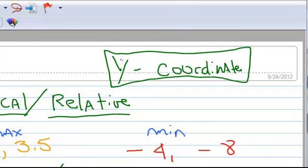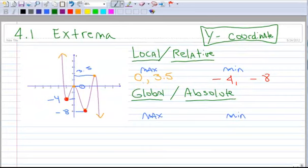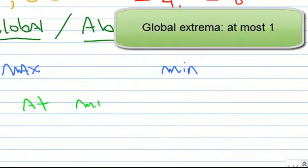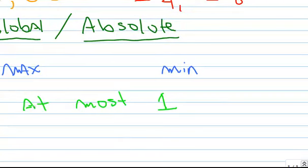Alright, so let's talk about global a minute. Okay, so global means extreme. Notice here, let's go back to local a minute. Notice for local, I had two maximums and two minimums. When we deal with global, we can have at most 1, which means you can have 1 or you can have none, because that would be at most 1. And the way you figure out if you have a global is you look to see the extreme of the extremes, so to speak.